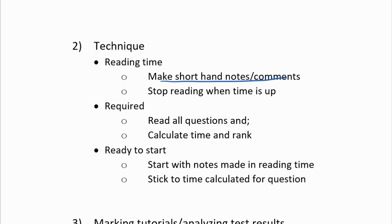What I mean by shorthand: for example, if I see there's a risk at the financial statement level because of some information, I would just note 'financial statement level risk' — that's a shorthand comment — and then move on. Don't highlight, because your paper will look a whole different color and you won't know what's important or why. A little comment like this means I already know exactly what happened in that paragraph or line.